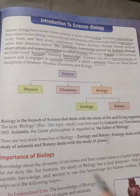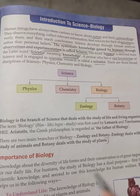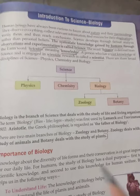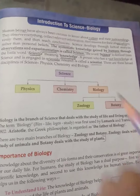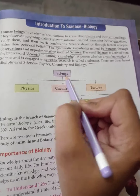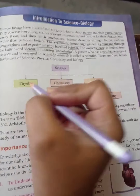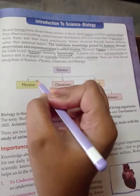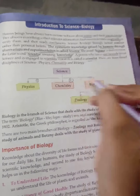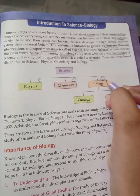Science is divided into three parts: the first is Physics, the second is Chemistry, and the third is Biology.